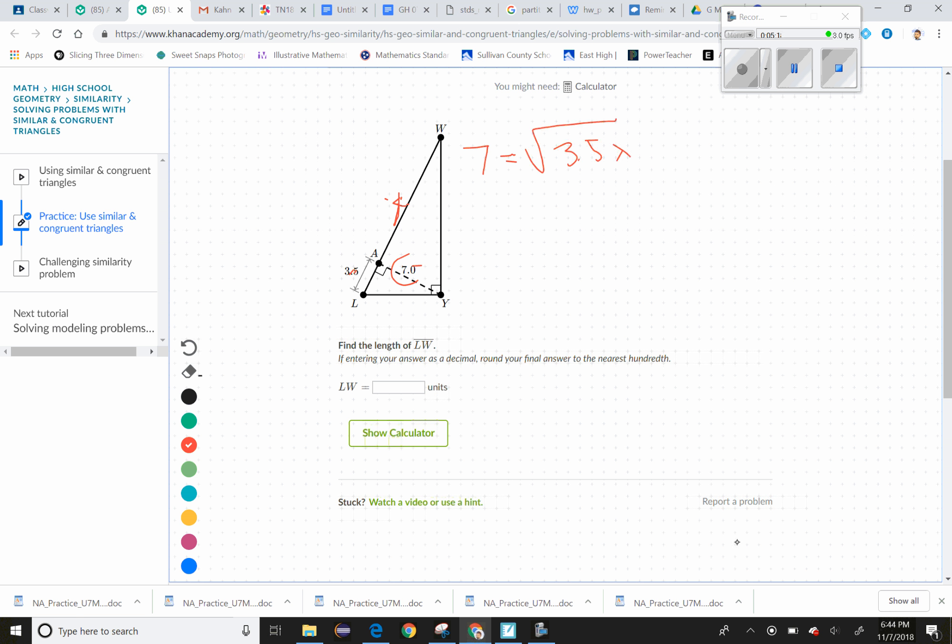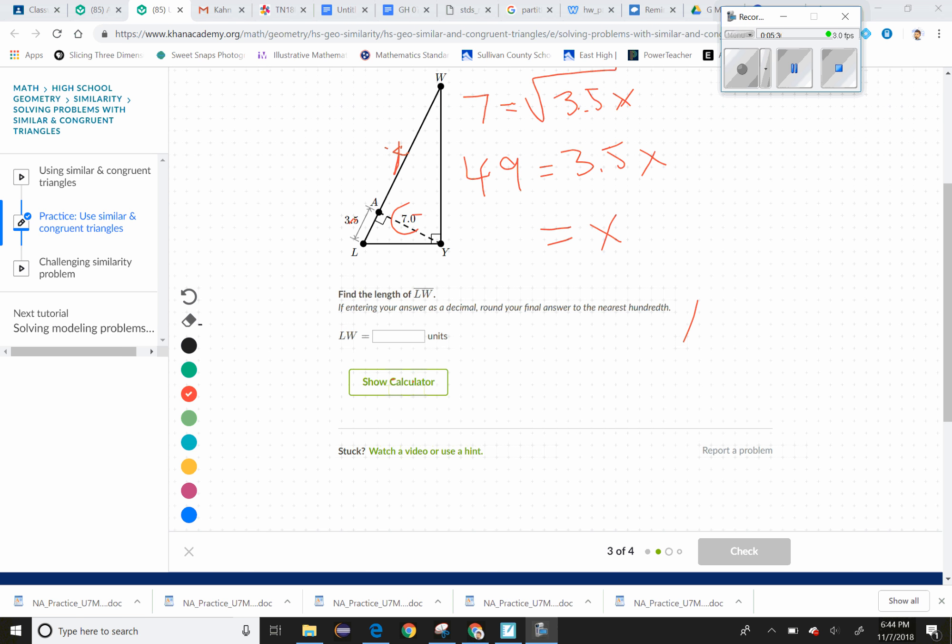And so I'll square both sides. I get 49 equals 3.5X. Divide both sides by 3.5 and that'll give me X—it ends up being 14. So this is 14. Therefore, to get LW, I just need to add those two together, so that should give me 17.5.